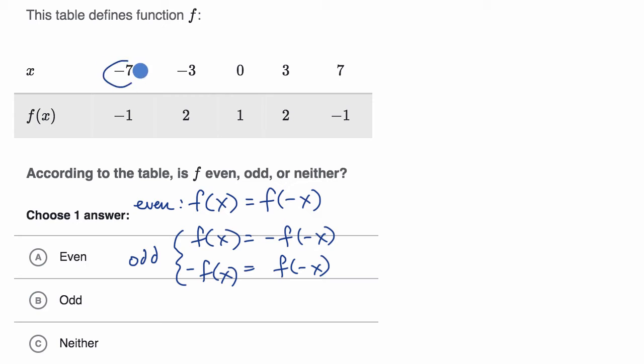So at least in that case, if we think of x as seven, f of x is equal to f of negative x. It also works for negative three and three—f of three is equal to f of negative three, both equal to two. You can visualize that we have this symmetry around the y-axis, so this looks like an even function.